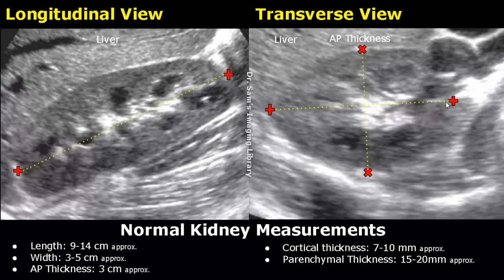In the transverse view, we can measure the width and AP thickness. For the width, one caliper is placed at the right margin of the kidney and the second caliper is placed at its left margin. The width is between 3 to 5 centimeters approximately.